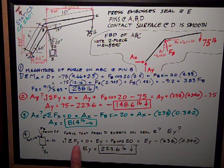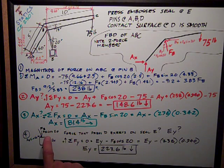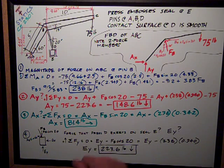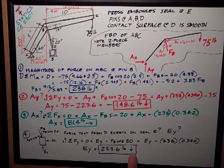So sum forces in the Y direction, positive is up. EY, the reaction from the seal, minus the vertical component of FB, which is FB cosine 20. Do the math, EY is equal to 238 times 0.940, which is the cosine of 20. So the upward force the seal exerts on the press is 223.6. To give the answer in the right direction, I've reversed that sign of that to be the force that the press exerts on the seal at E.